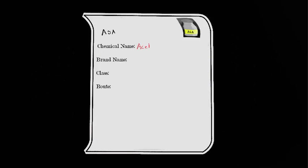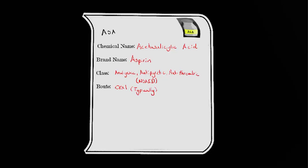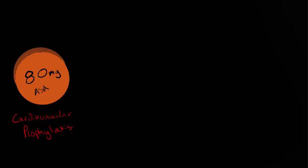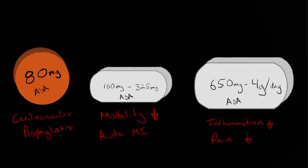ASA. Chemical name is acetylsalicylic acid, often sold under the brand name aspirin. Class: analgesic, antipyretic, and antithrombic, although sometimes just referred to as an NSAID. Route: oral, typically. Dose varies from 80 mg daily for prevention of cardiovascular disease such as heart attacks and stroke, 160–325 mg for mortality reduction in suspected acute myocardial infarctions, and 650 mg–4 g a day for inflammation and pain relief.